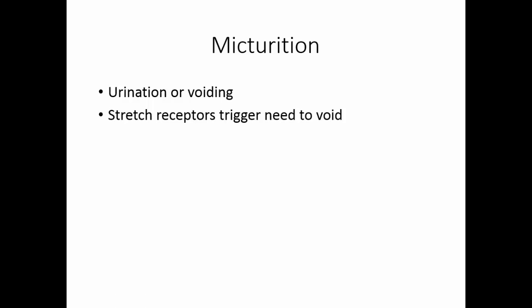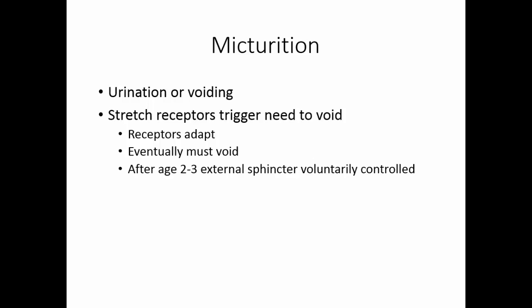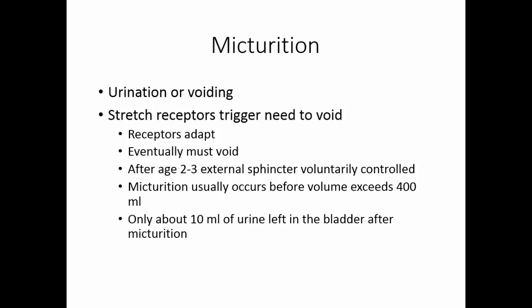Micturition is the act of voiding or urination. Stretch receptors in the urinary bladder trigger the need to void. The receptors will adapt, so you may be able to put off voiding for a while, but at some point you have to void — the stretch receptors will overcome any voluntary control. After the age of 2 or 3, the external sphincter is usually voluntarily controlled 24 hours a day. Micturition usually occurs before the volume of urine in the bladder exceeds 400 milliliters. After micturition, only about 10 milliliters of urine are left, usually in the trigone area.